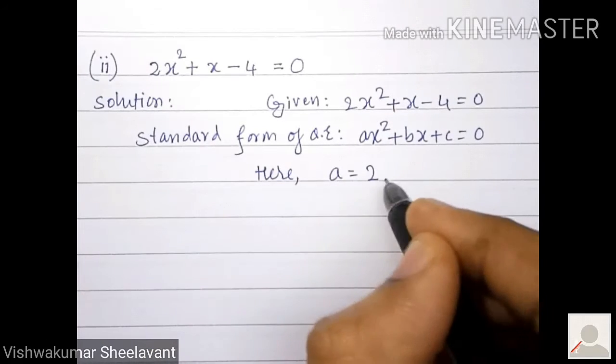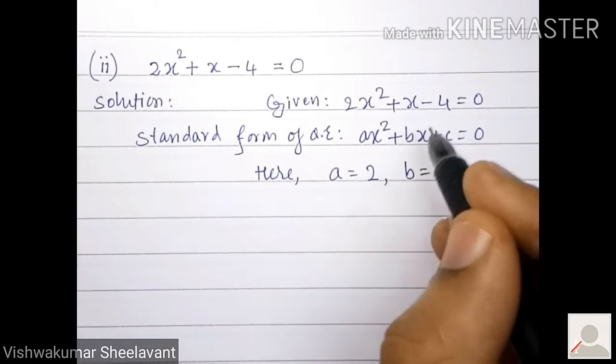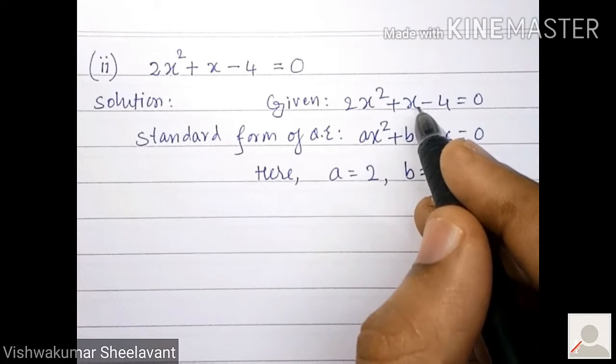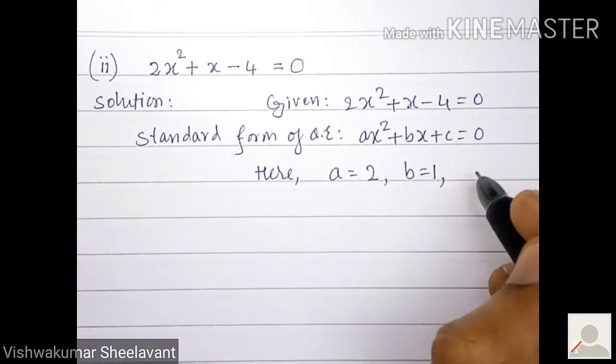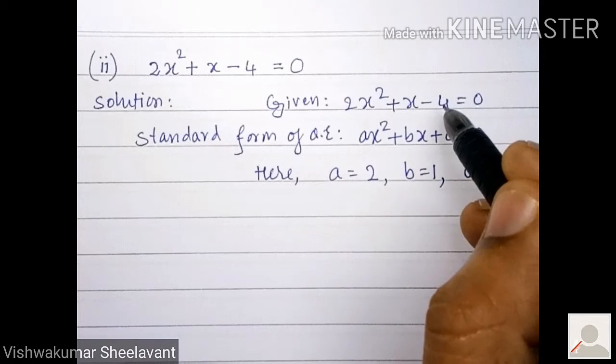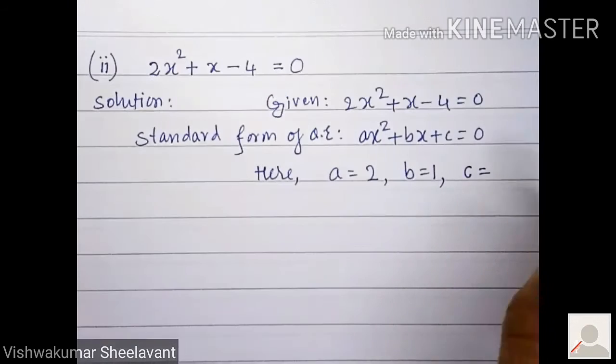Here, a is equal to 2. The coefficient of x in the question is 1, so b is equal to 1. The constant term is minus 4 in the question, therefore c is equal to minus 4.